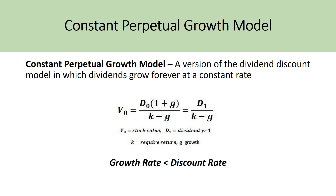For the constant perpetual growth model, it is a version of the dividend discount model in which dividends grow forever at a constant rate. Instead of the question providing you with dividends paid in each year, it assumes the company will constantly increase the dividend at a respective growth rate forever. This assumption can be made for extremely stable blue chip companies — Fords, banking companies, financial service companies — that have guaranteed their shareholders that their dividend will continue to increase at a sustainable and consistent rate. The formula takes the dividend paid in the base year, multiplies it by one plus the growth rate, then divides by the discount rate minus the growth rate — simplified to D(next year) divided by K minus G.